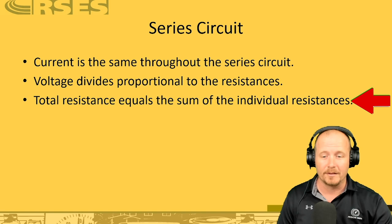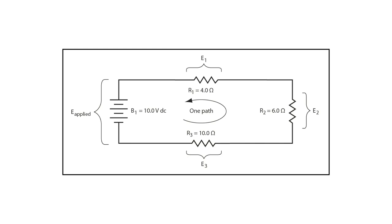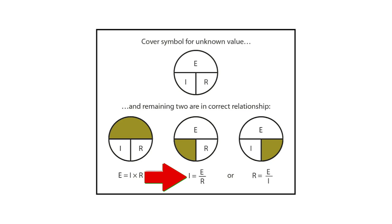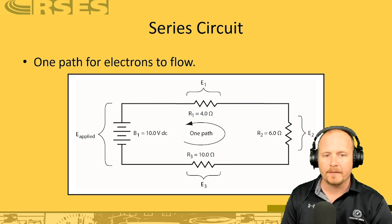In a series circuit, there is only one path for electrons to move through. You just take the resistances and add them all up. Here, total voltage is 10 volts DC and total resistance is 20 ohms. Solving for current using I equals E divided by R: E is 10 volts, R is 20 ohms, so I equals 10 divided by 20, which is 0.5 amps.